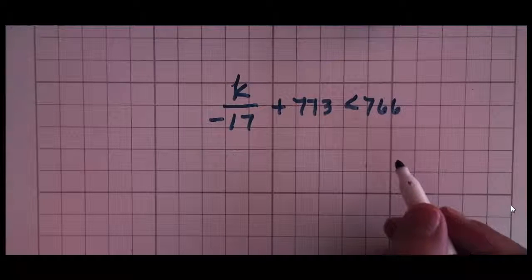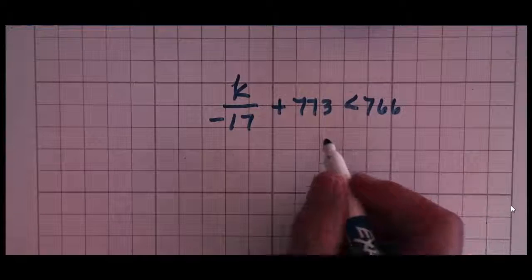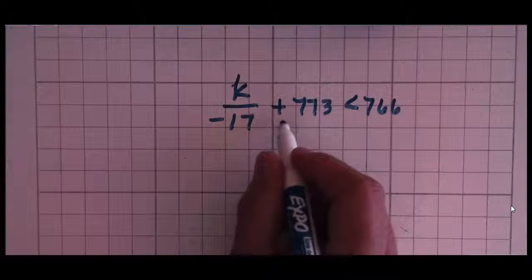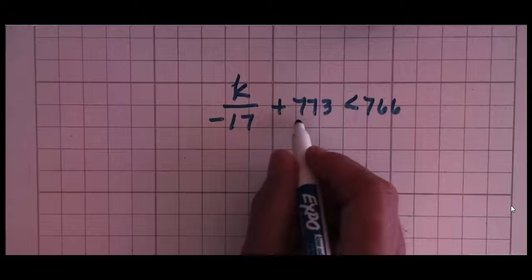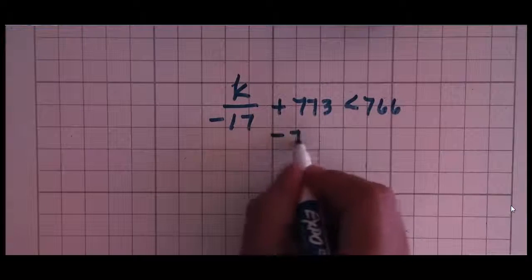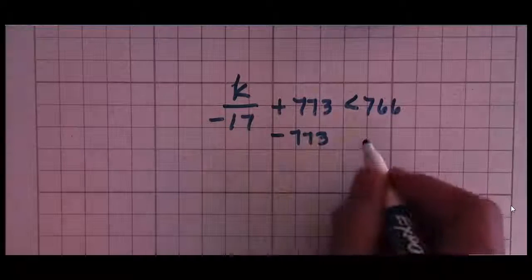Could you do it by hand? Probably. Should you do it by hand? Hmm. Might not be necessary. First thing I want to do is move the 773 over. So I'm going to subtract 773 because that's the opposite of addition.